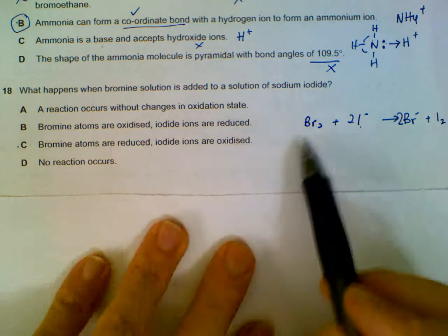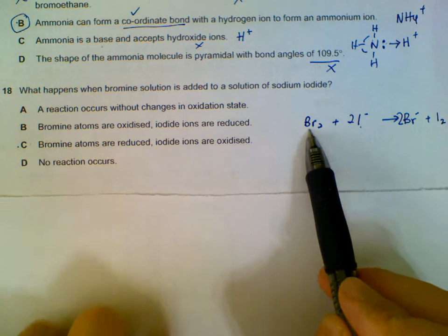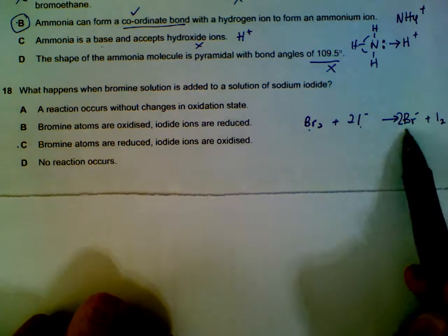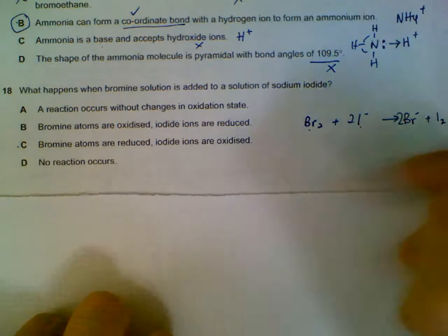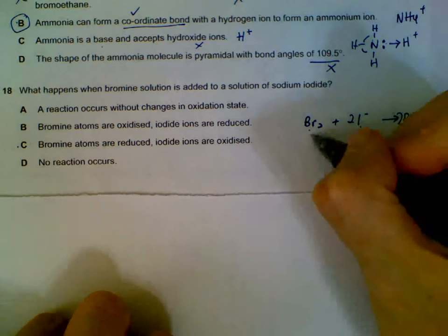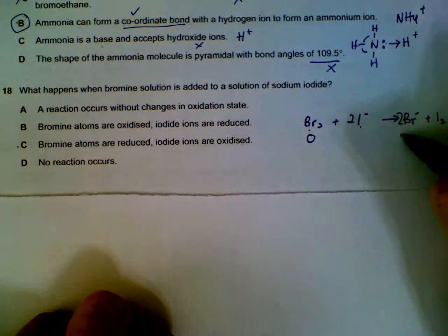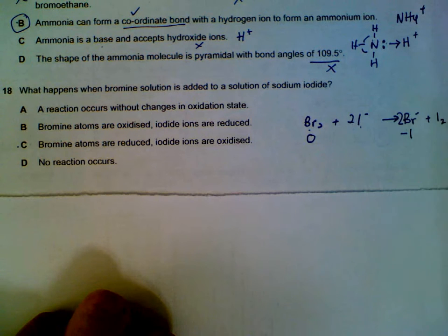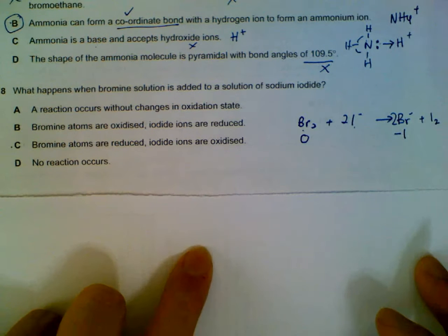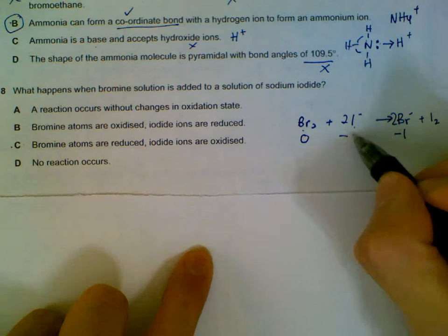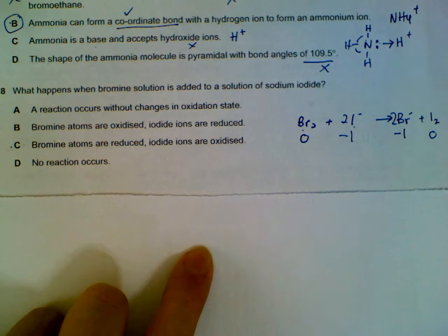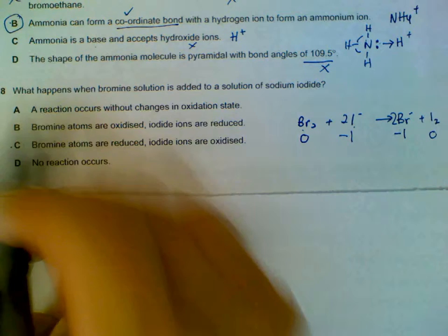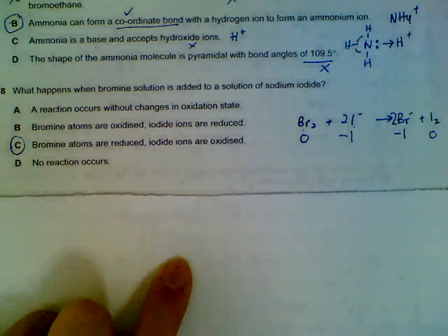So what happens is bromine will be reduced, iodide will be oxidized. We can check the oxidation state: element zero becomes minus one, so oxidation state decreases - it's reduced. Iodide minus one then increases to zero. So bromine is reduced, iodide ions are oxidized.